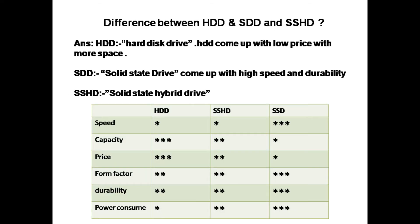The next question is the difference between HDD, SSD, and SSHD. HDD means Hard Disk Drive — it comes with a low price and more storage space. SSD means Solid State Drive — it comes with high speed and durability. SSHD means Solid State Hybrid Drive — it is a combination of HDD and SSD.